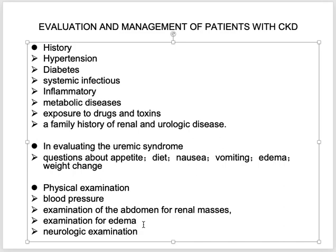Renal failure patients can also present as emergencies — with coma, drowsiness, fits, arrhythmias, or metabolic acidosis with Kussmaul respiration. The complete clinical package of chronic renal failure includes symptoms of uremia, fluid overload, the underlying cause, and evidence of renal replacement therapy.